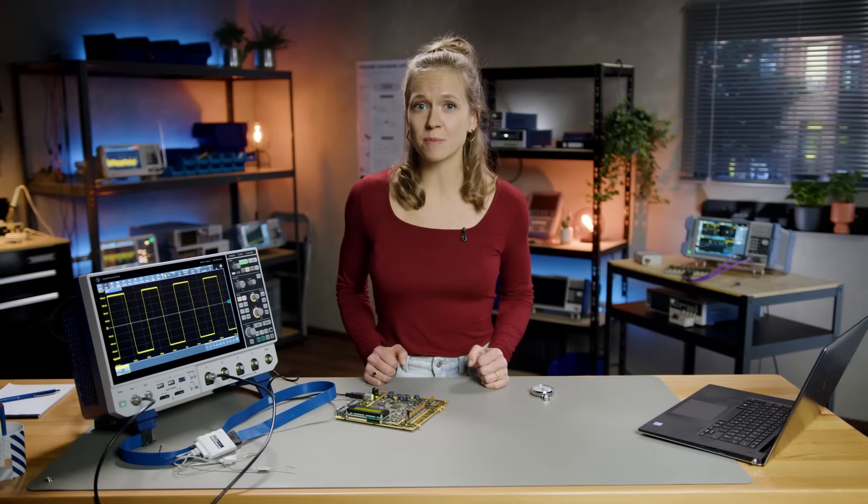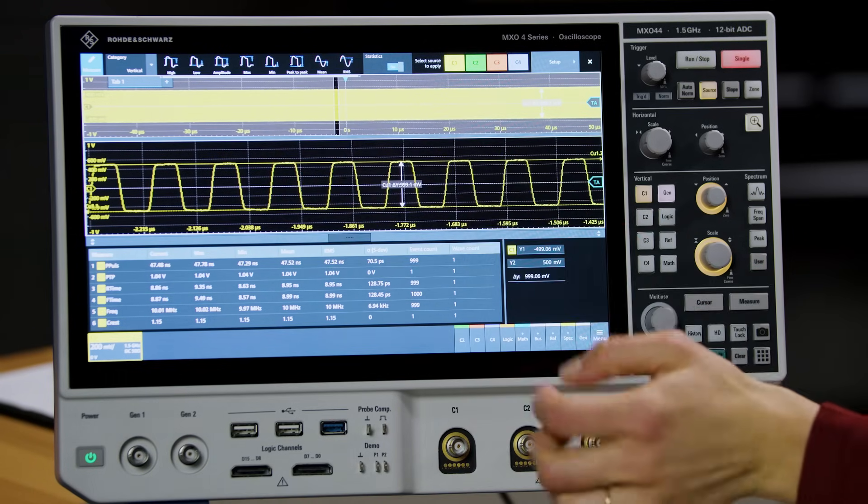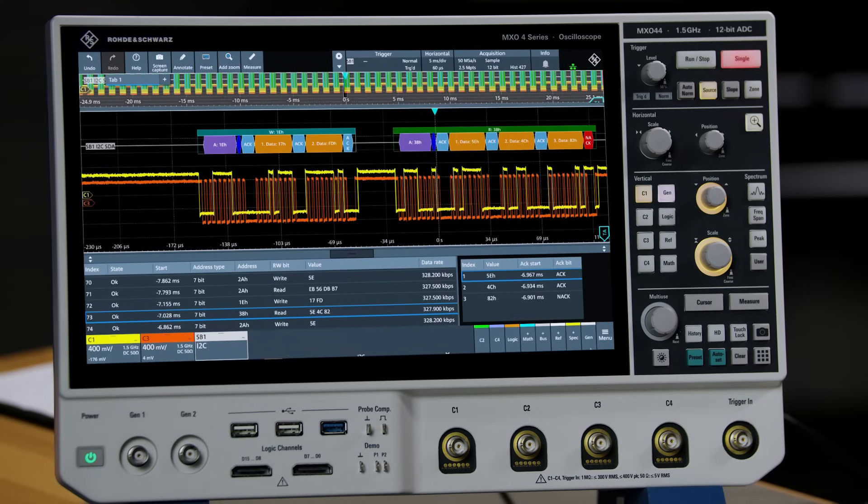For example, performing automated measurements such as peak-to-peak or RMS voltage, measuring the period or frequency of a waveform. They can also display 16 digital channels, decode and debug serial bus information, and even display frequency domain information similar to a spectrum analyzer.